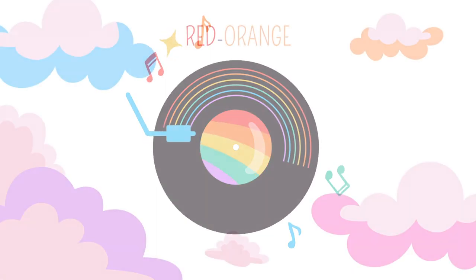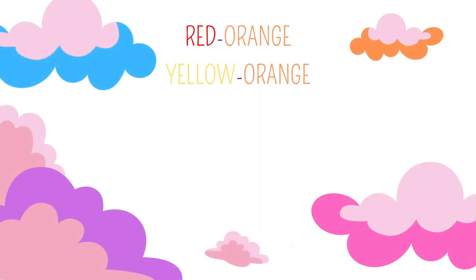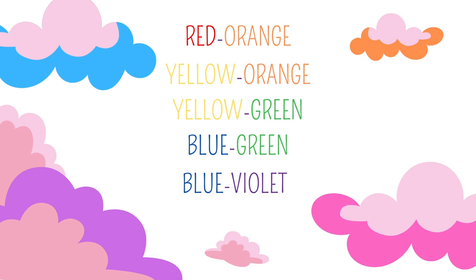Let's say them together. Red orange. Yellow orange. Yellow green. Blue green. Blue violet. Red violet.